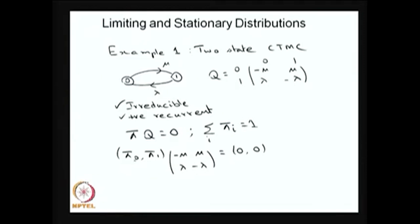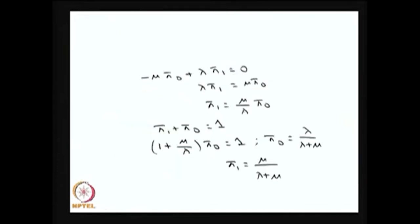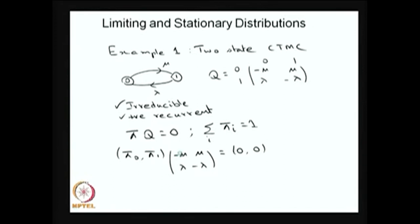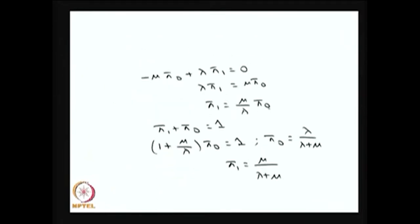So you can solve πQ = 0 and the summation of π = 1. Taking the first equation: -μ × π_0 + λ × π_1 = 0. From this I can get π_1 in terms of π_0. Since it is a homogeneous equation, I use the normalizing condition to get π_0 = λ / (λ + μ) and π_1 = μ / (λ + μ). This is the stationary distribution as well as the limiting distribution.